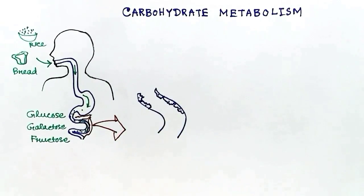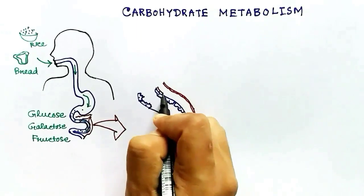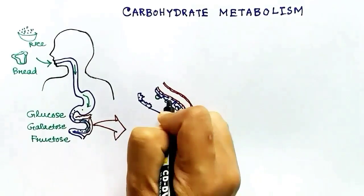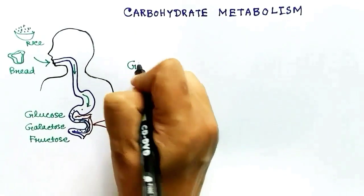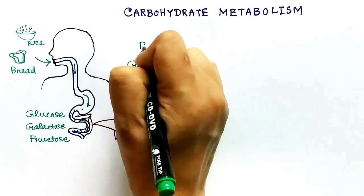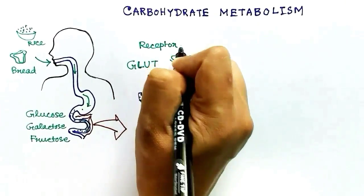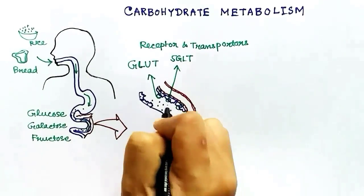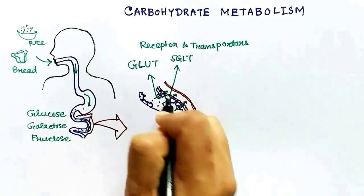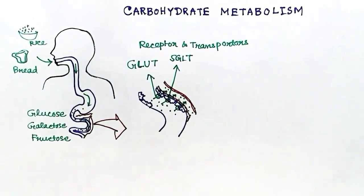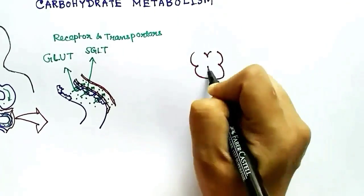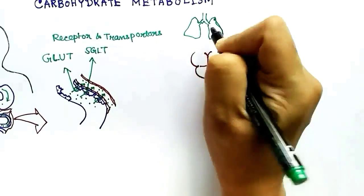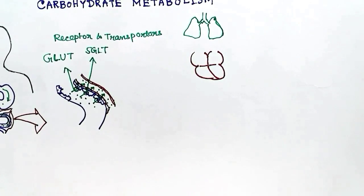After breaking down, the monomers get absorbed into the bloodstream. This absorption occurs via transporters present in the cells of the digestive tract — the GLUT transporters and SGLT transporters — through which glucose, galactose, and fructose are absorbed into the bloodstream.